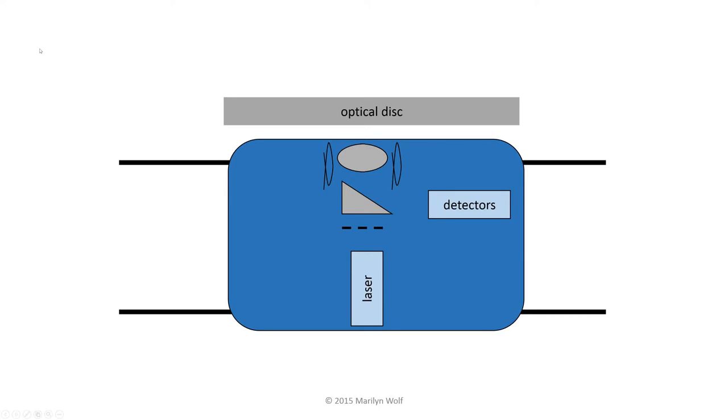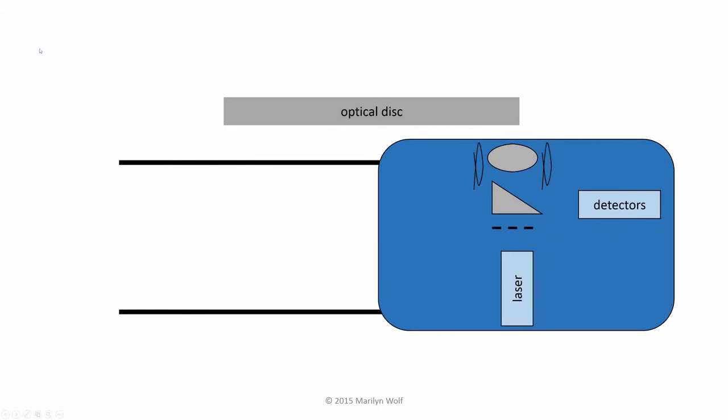Optical discs are designed to use very simple, cheap mechanisms. We compensate for the limits of the mechanics by using sophisticated control. I've taken apart a CD drive here. You can see that the mechanism is made of plastic. The center of the disc goes here, and there's a lens here that's at the core of the optical system for the drive. If you turn it over, we'll see that there's a screw here that moves the optical mechanism back and forth along the disc — it's known as a sled. It rides along a track, pushed by the motor.